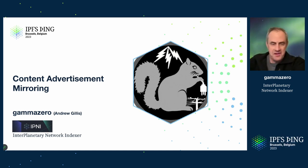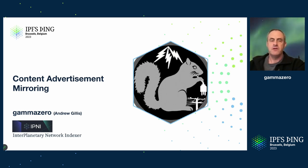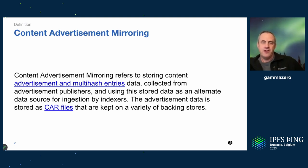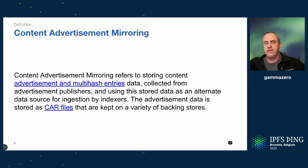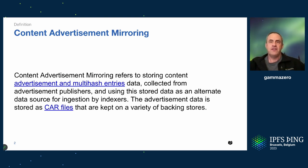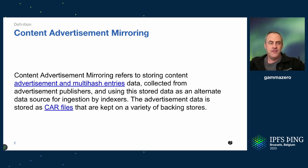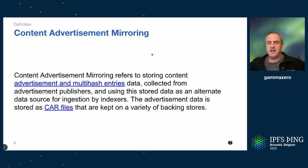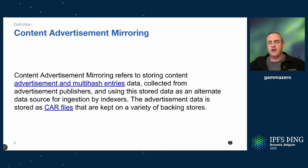We're here to talk about content advertisement mirroring. This is a specific type of mirroring that mirrors the content advertisements used in indexing. Content advertisement refers to storing content that advertises all of the multi-hash data that we index. Multi-hash data gets indexed when it is advertised by an advertisement publisher — they publish information saying here's all the things that are available, go ahead and index it. We want to collect that data and be able to use it later, collecting it in a special type of mirroring based on CAR files.